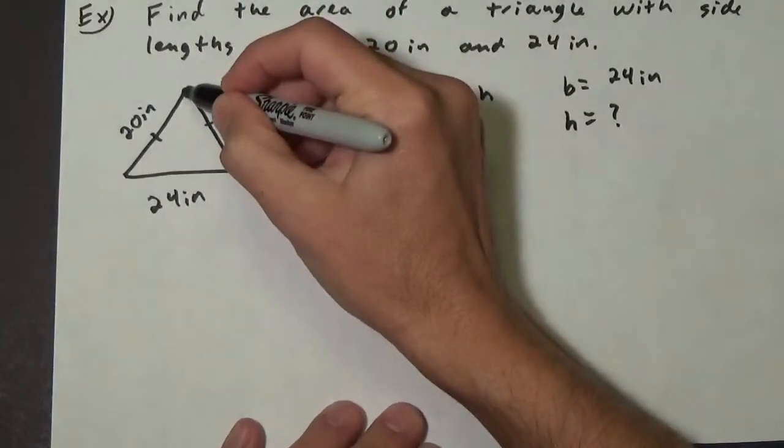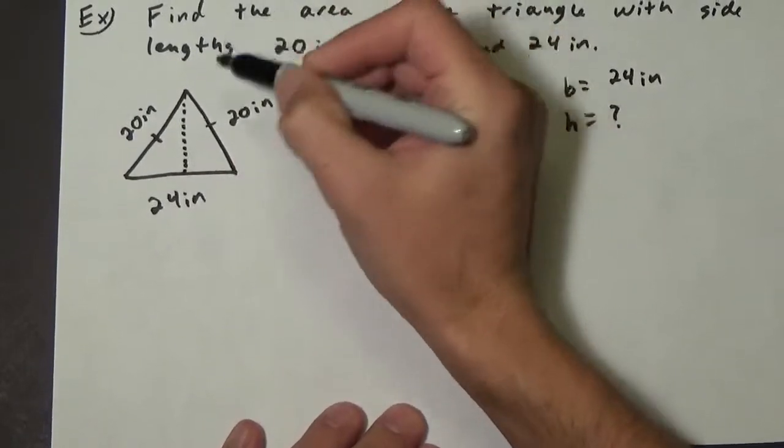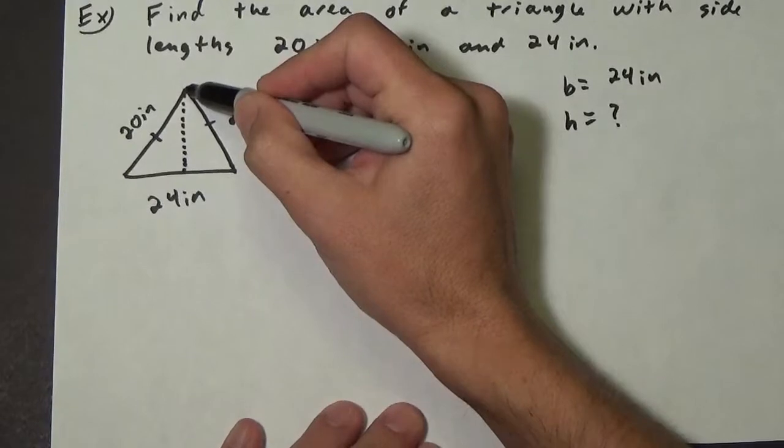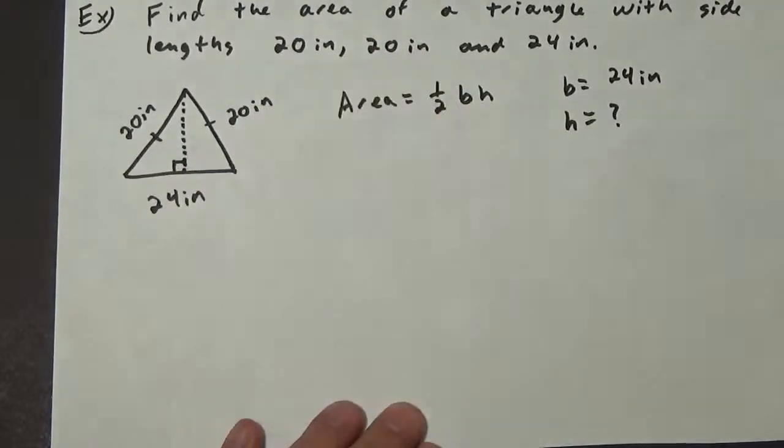right here. Remember, the height goes from a vertex to the opposite side and is perpendicular to that opposite side. Now, to get this height h, we're going to use the following theorem—